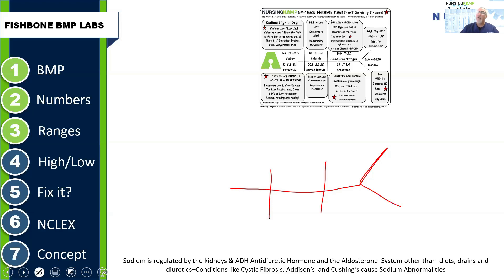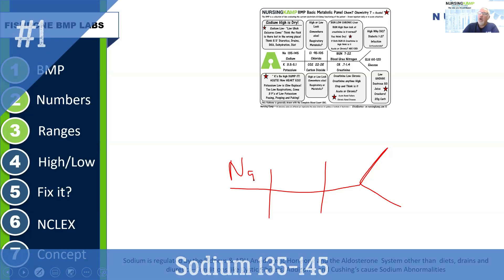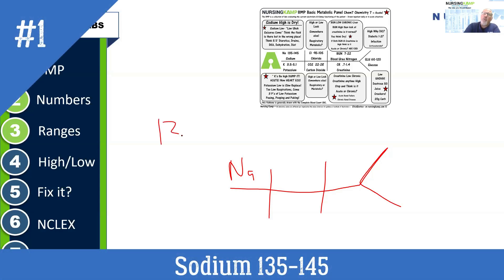Let's talk about the numbers. The first column is sodium. Sodium is the first column and the only true lab value that you need to know. That lab range is 135 to 145. We'll talk more about what's important — high versus low — but right now we're focusing on the lab values.